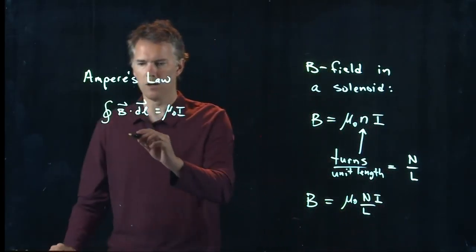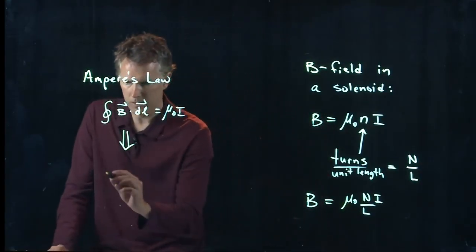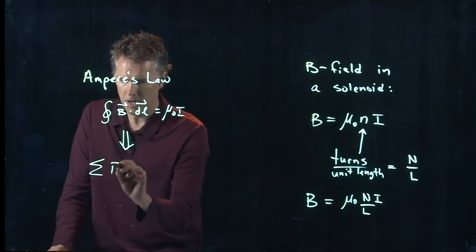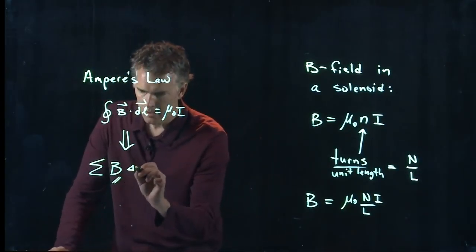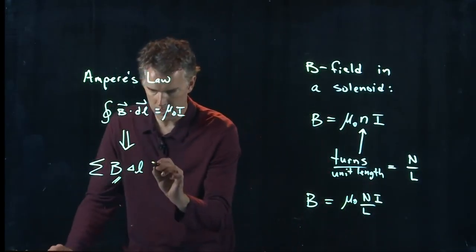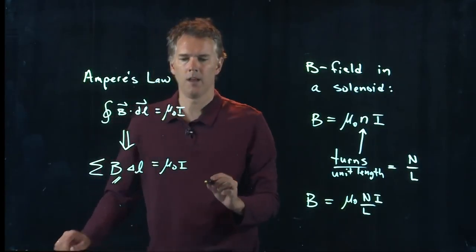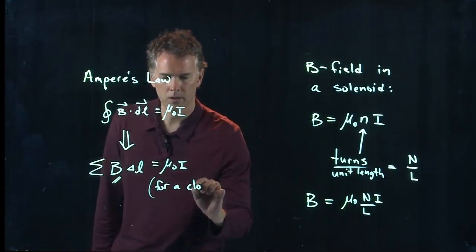What this becomes when you don't want to deal with path integrals is the following: the summation of B parallel along ΔL equals μ₀I. And this is for a closed loop.